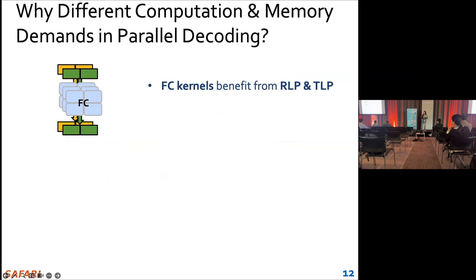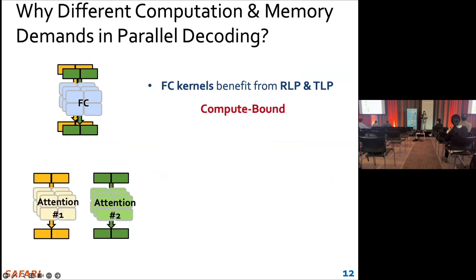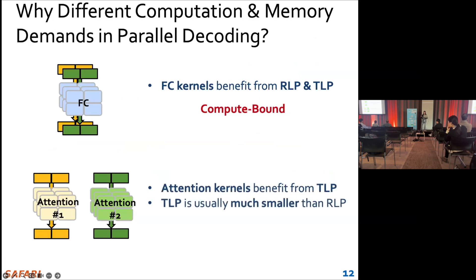So when the RLP and TLP are very large, we can get compute-bound FC kernels. For the attention kernels, we can only process different requests serially since different requests have different attention data. Therefore, attention kernels can only benefit from TLP, and since attention kernels usually have a much smaller TLP than RLP, attention kernels can only be memory-bound.